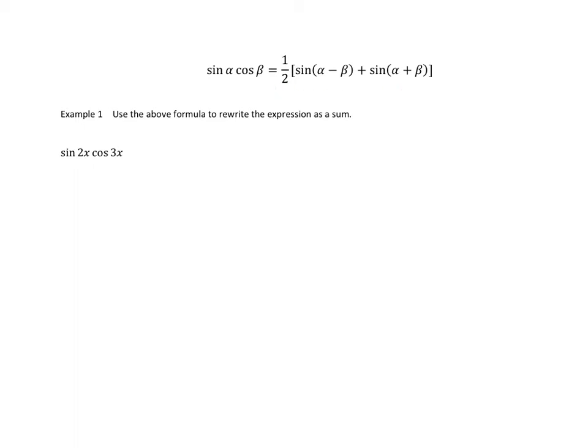So here at the top, I just stated what I derived on the last slide, that sine of alpha times cosine of beta is really equal to one half of sine of alpha minus beta plus sine of alpha plus beta. Example one says, use this formula to change this product into a sum. So the left side here of this equation is a sine times a cosine, and that's exactly what we have here.